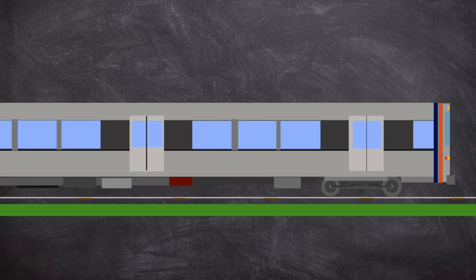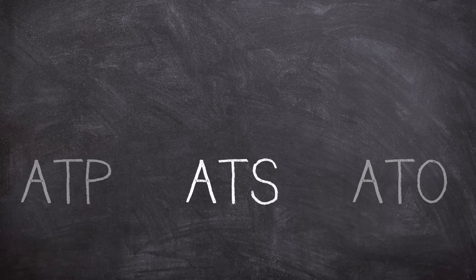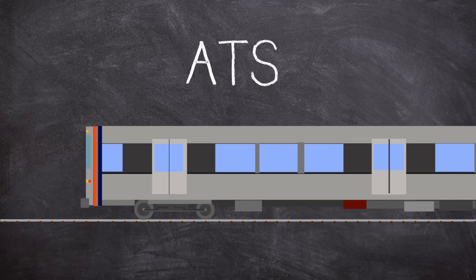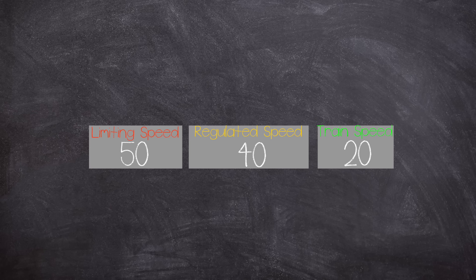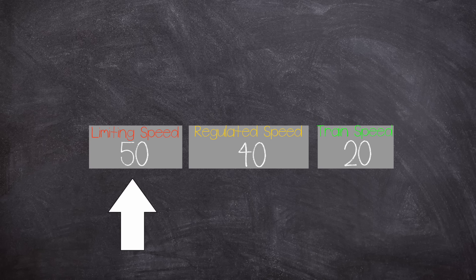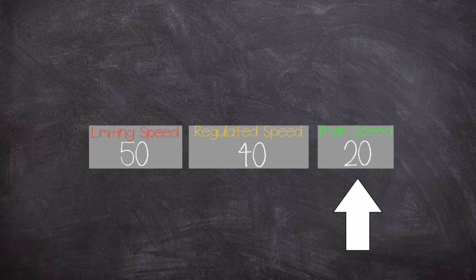The next part is the automatic train supervision subsystem, or ATS. This system is not failsafe and is tasked with regulating the service, to set a maximum speed to enforce the schedule. In the cab there are three speeds displayed to the operator: the maximum safe speed set by ATP, then the maximum allowed speed set by ATS, and then the actual speed of the train. The ATS speed can't be higher than the ATP speed.